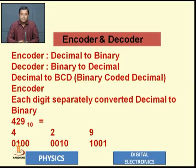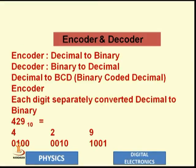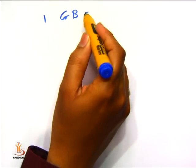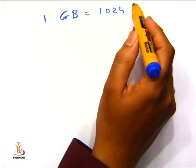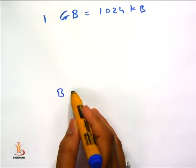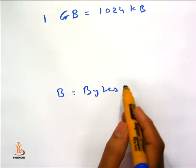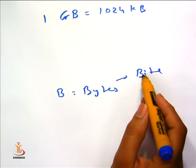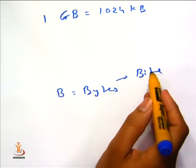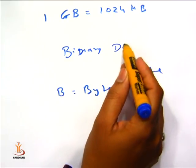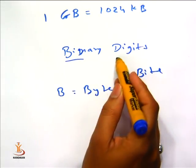TB means terabytes, GB means gigabytes. We are able to convert 1 GB that is equal to 1024 KB. B stands for bytes. There are basic differences between bytes and bits. Bit means this word is a measure of binary digits.